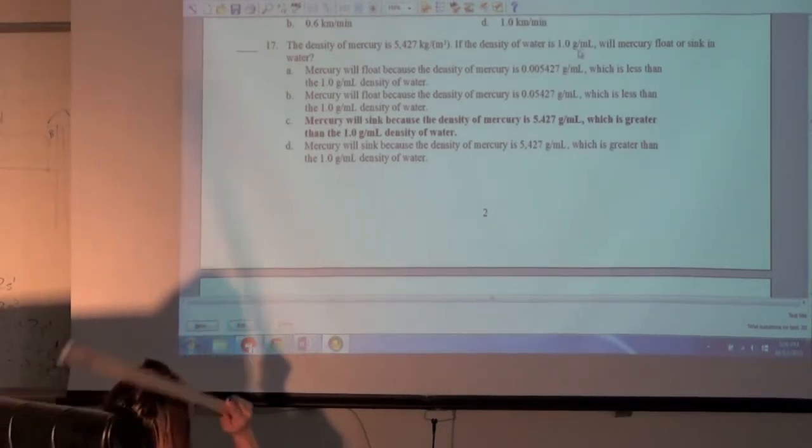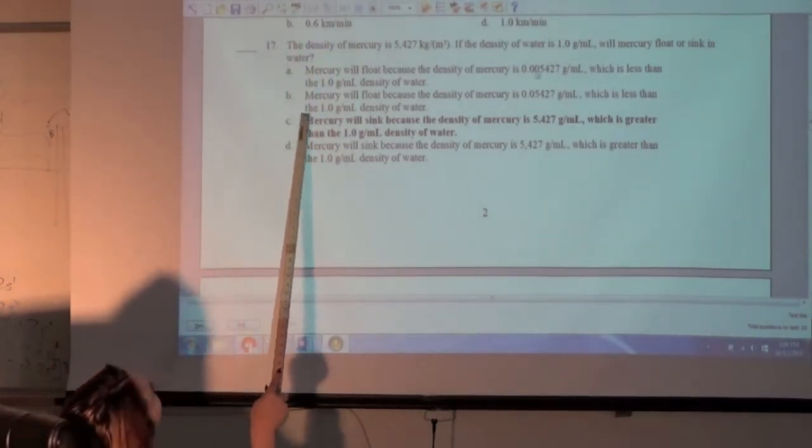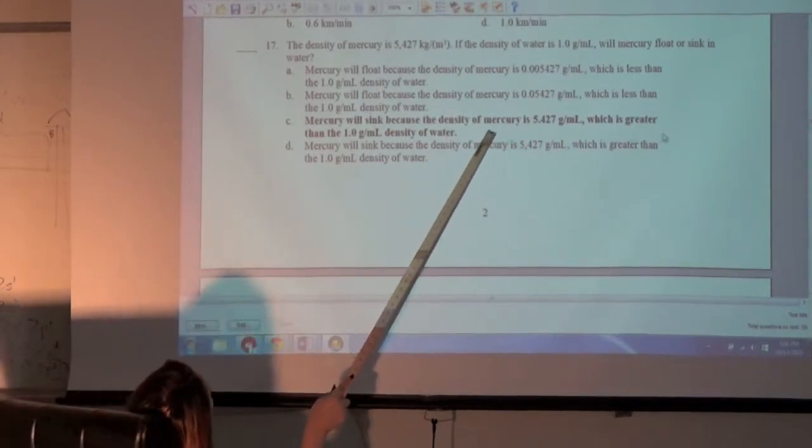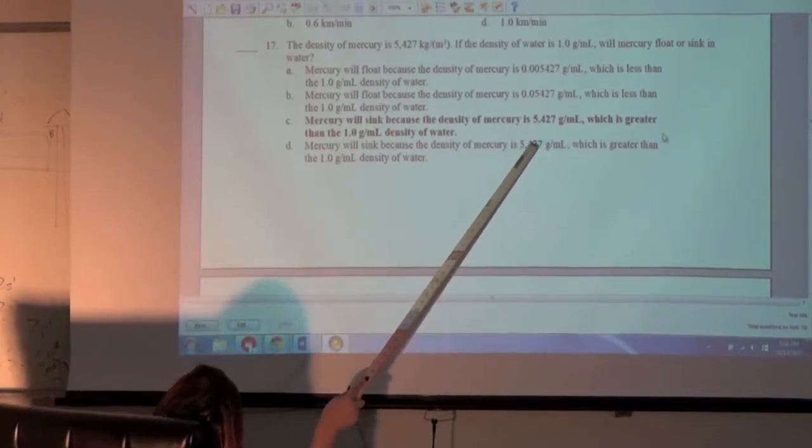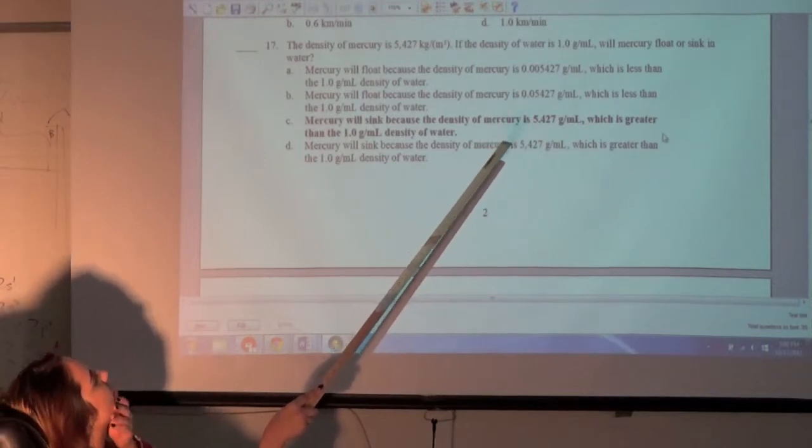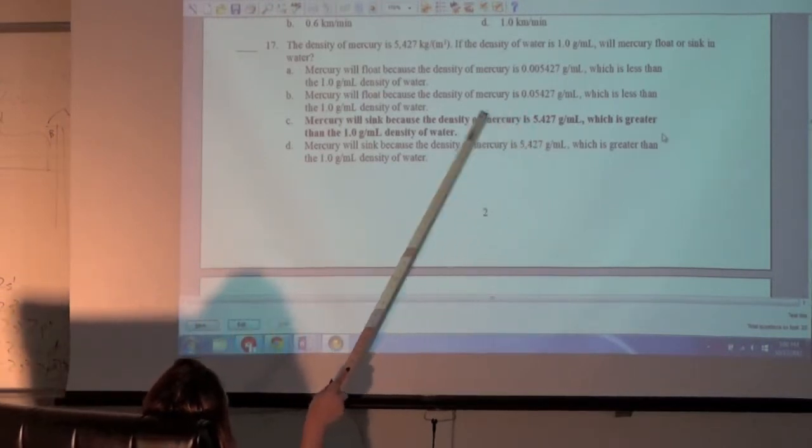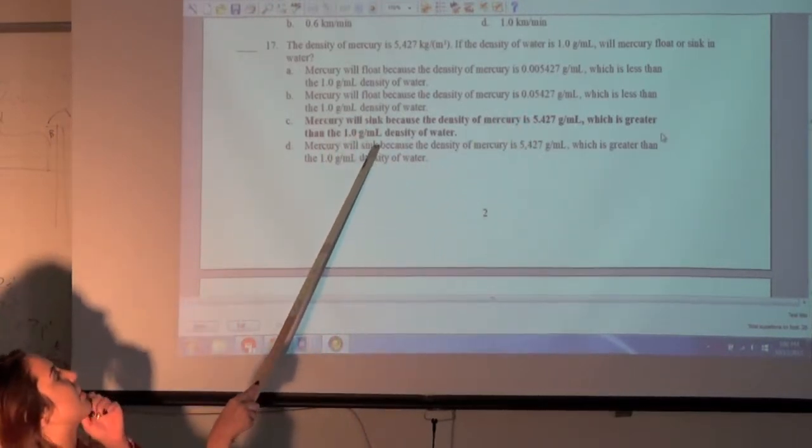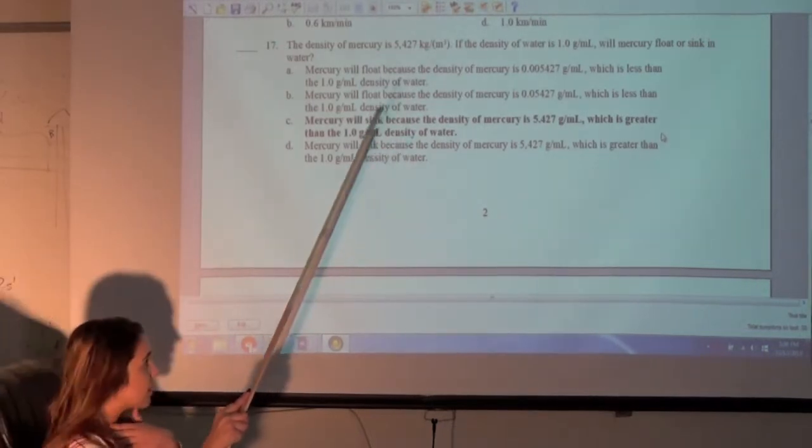Will mercury float or sink in water? C, mercury will sink because the density of mercury is 5.427 grams per milliliter, which is greater than 1.0 grams per milliliter density of water.